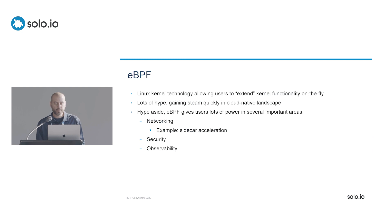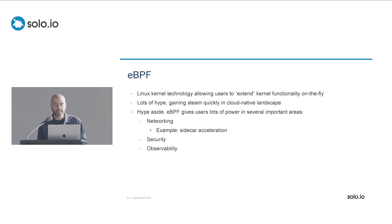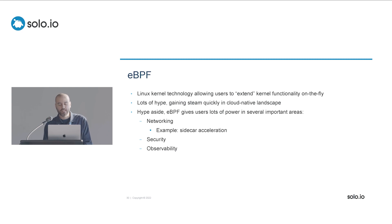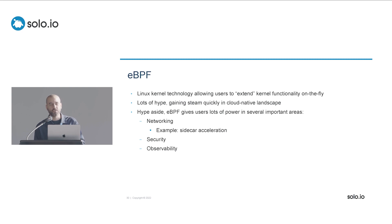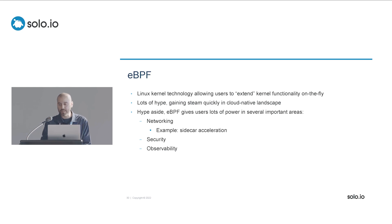That's where eBPF comes in. eBPF is the Linux technology that allows you to extend the kernel on the fly. There's a lot of hype surrounding it, and it's gaining steam quickly in the cloud-native world. Aside from the hype, there's a lot of value in networking specifically. Even today with the sidecar model, there's the concept of sidecar acceleration — used by projects like Mayer Bridge and in Gloo Mesh — which uses eBPF to shorten the network path for traffic going to and from sidecars. This is becoming table stakes for a sidecar-based mesh.